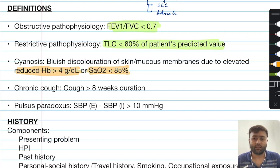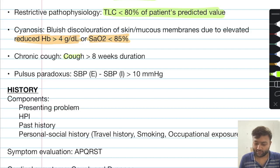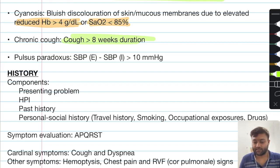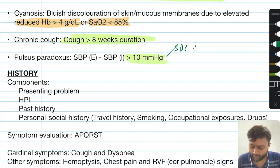Cyanosis is generally detected when the SAO2 falls to less than 85%, at which point the fingertips will start becoming blue. Chronic cough is defined as cough lasting more than 8 weeks duration. Pulsus paradoxus is defined as the difference in systolic blood pressure between expiration and inspiration that is greater than 10 mmHg.